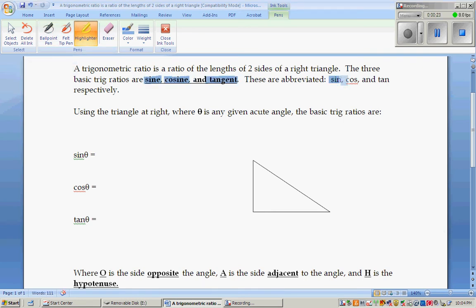And they are abbreviated like this: sine, cos, tan, respectively. They are always written in that order on a calculator, or if you have just a trig button, the menu will always come up in that order.